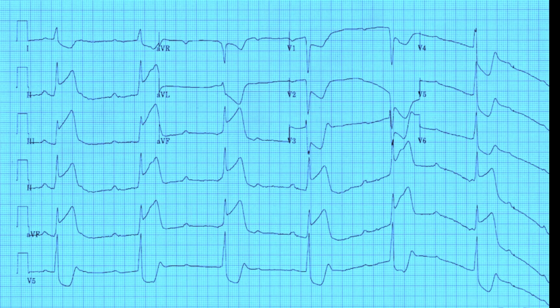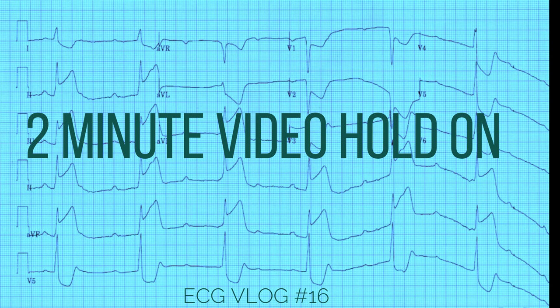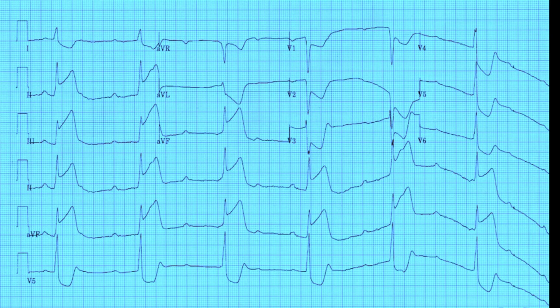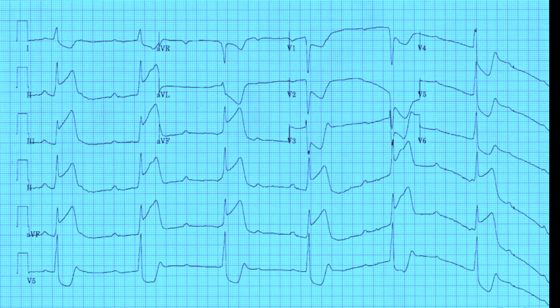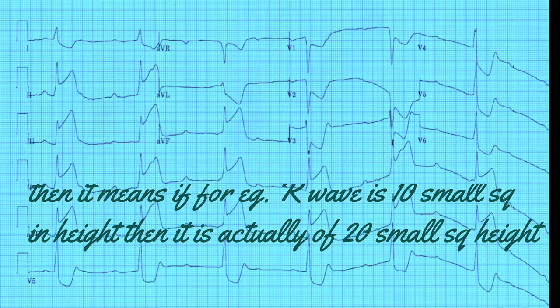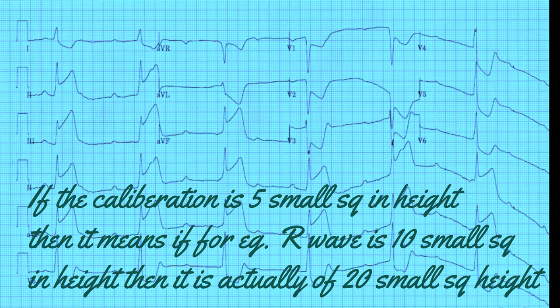Today we will be discussing a case of complete heart block and we'll finish it in two minutes. Look at this ECG — the calibration is totally fine, it is 10 small squares in height and the plateau is good, which means the voltage has not been reduced in the calibration by the ECG machine. If the ECG paper is bypassed by the stylus during recording, the calibration is reduced to half — just five small squares in height — meaning if your R wave in a certain lead is 10 millimeters, it is actually 20 millimeters. This part you have to remember.